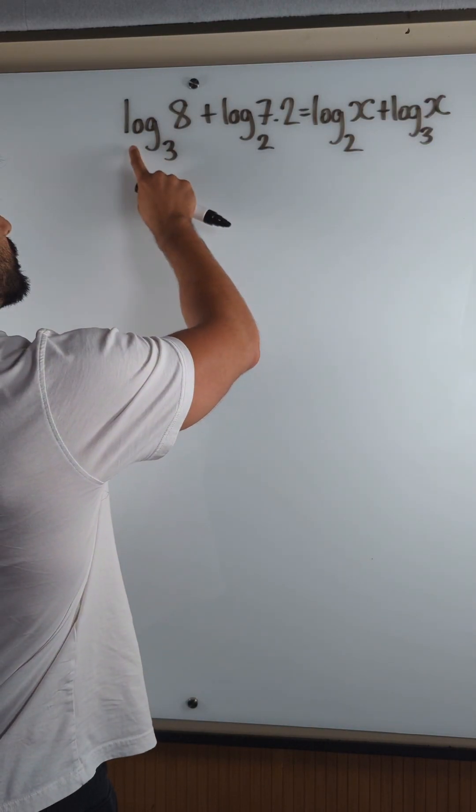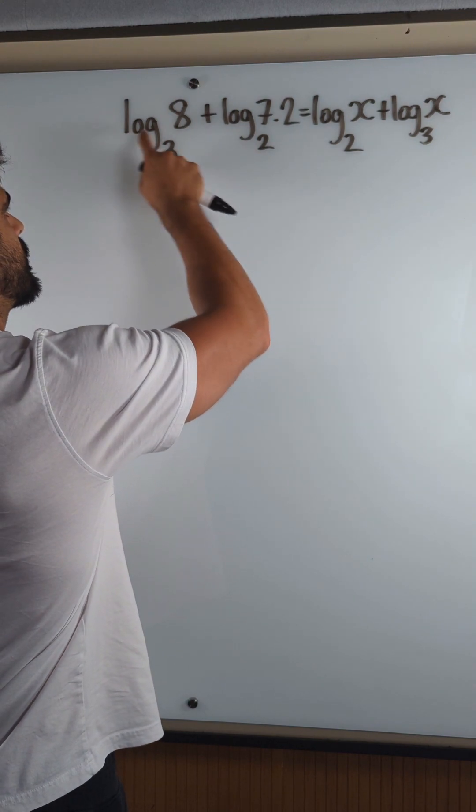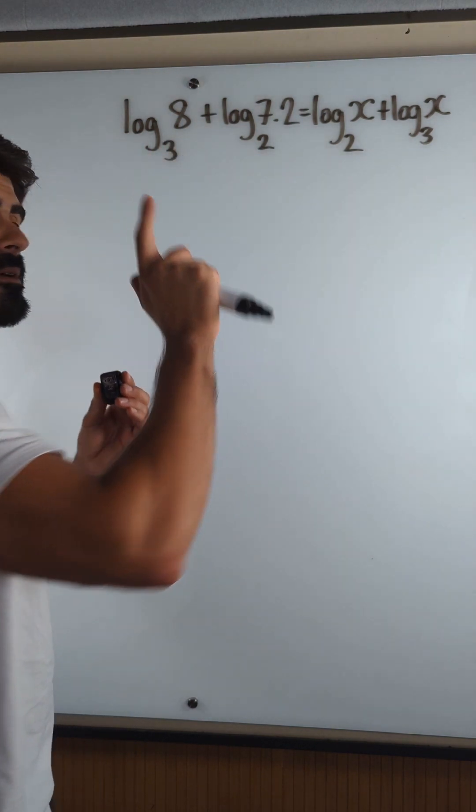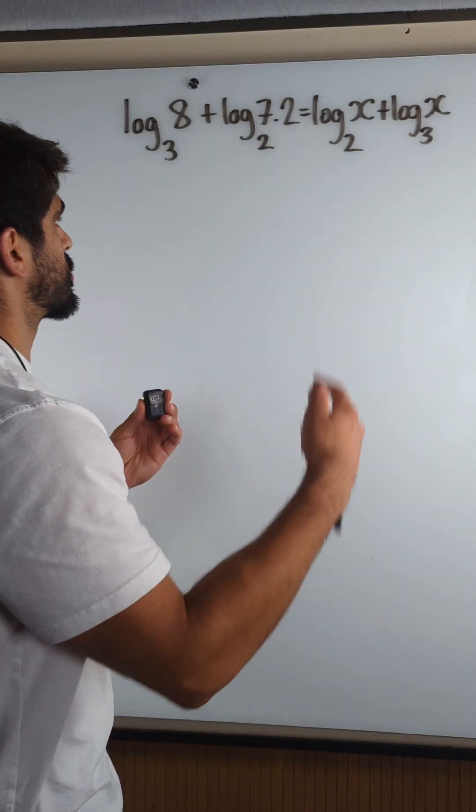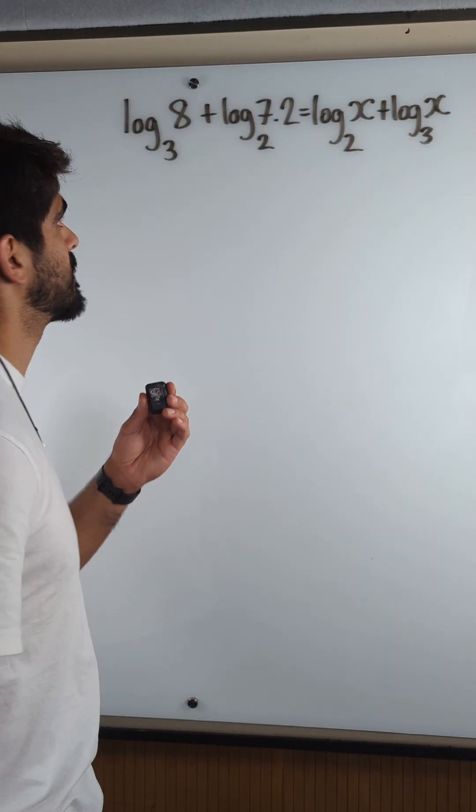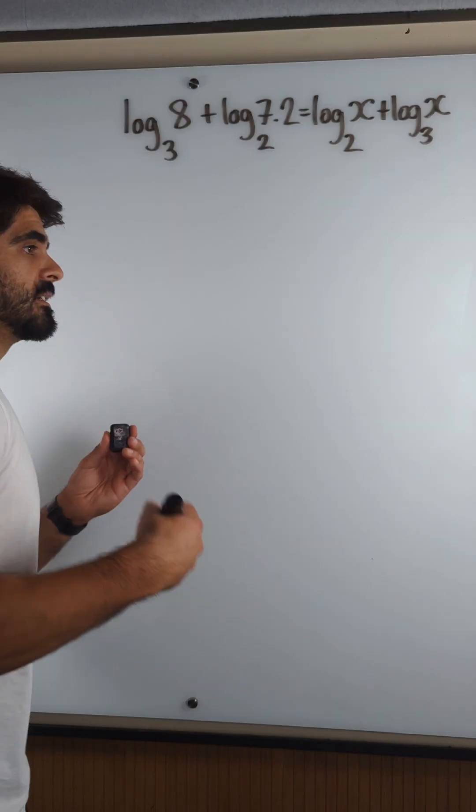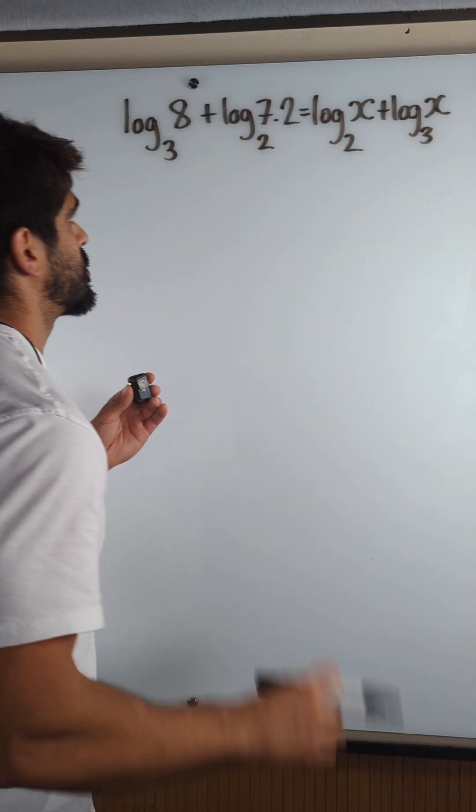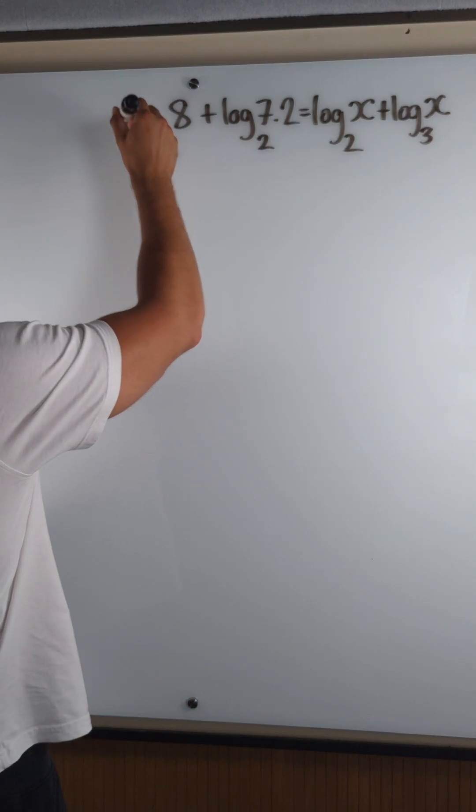I'm looking at this log base 3 of 8. If that was log base 2 of 8, that would actually be a much easier calculation to do because log base 2 of 8 is 3. It's saying 2 to the power of what is 8. So here we have to use the change of basis formula, which is actually very simple. How does it work?